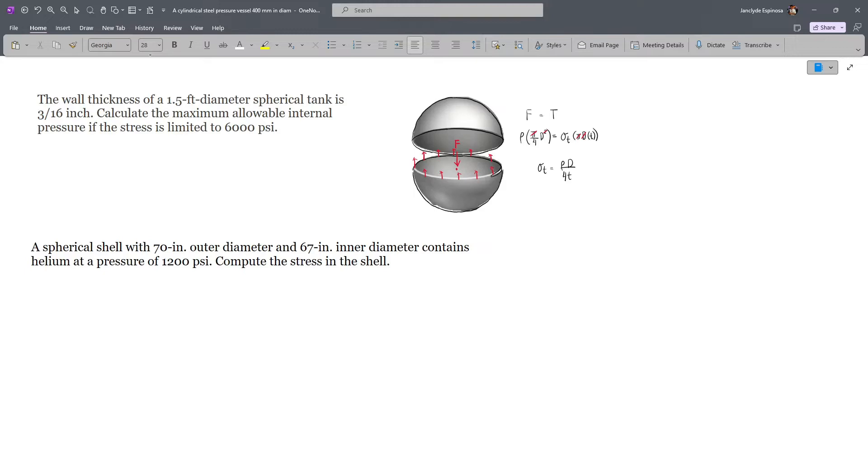Recall that in spherical shells, we only have this formula because we don't have a longitudinal axis, so we will just use PD over 4T from our derived equation. Let's identify our given: the stress is 6000 psi, which will be our circumferential or tangential stress. Our thickness is 3/16 and our diameter is 1.5 feet.